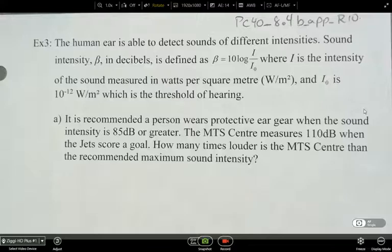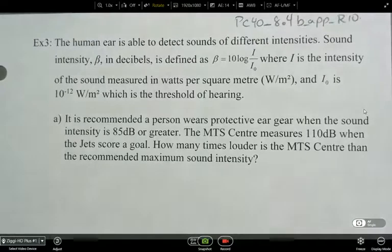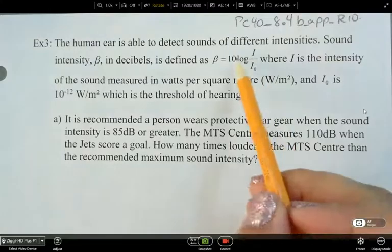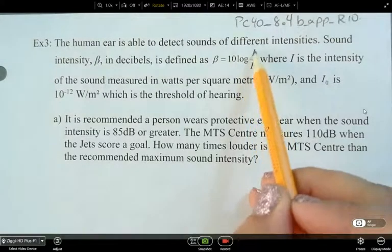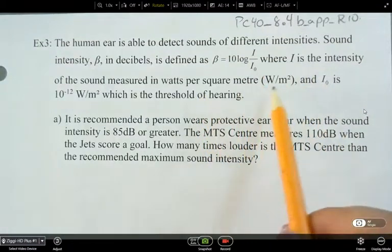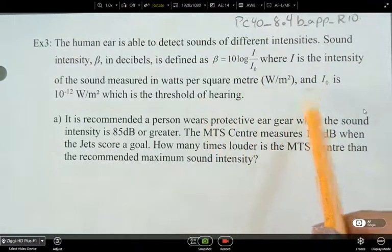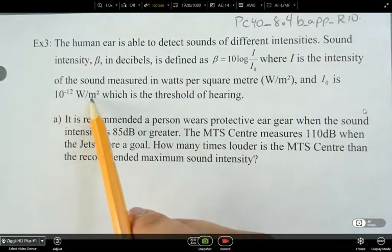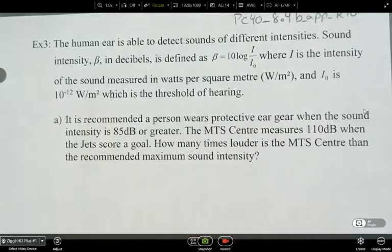Okay, so we're going to finish off 8.4 here. We're going to look at the third example. It's talking about a human ear. A human ear is able to detect sounds of different intensities. Sound intensity, beta, in decibels is defined as beta equals 10 times the log of i over i-naught, where i is the intensity of the sound measured in watts per square meter, and i-naught is 10 to the negative 12 watts per meter squared, which is the threshold of hearing.